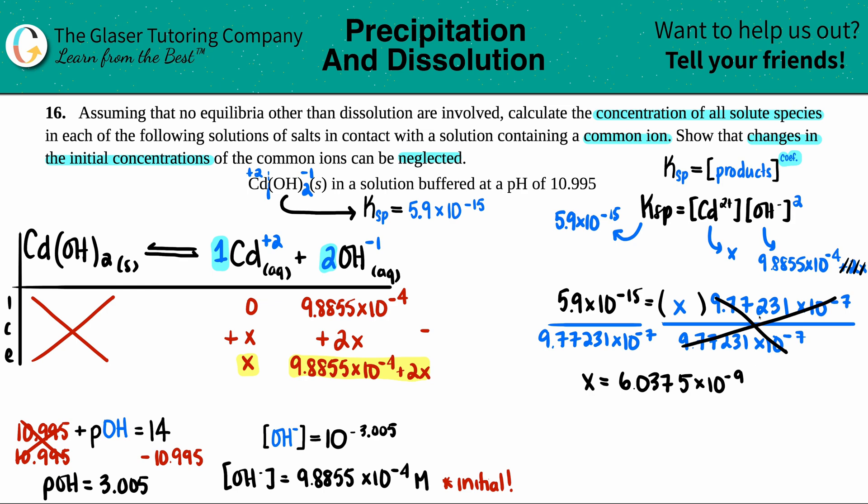Let's see if this passes the 5% rule. What you're going to do is you're going to take your x value, divide it by the initial, which is the 9.8855 times 10 to the negative 4th, and times it by 100. If this answer is 5 or less, then we assumed correctly. But if it's more than 5, we have to go back and do the quadratic equation. So 6.0375 times 10 to the negative 9th divided by 9.8855 times 10 to the negative 4th times 100. And yeah, I mean, not even 1%. So we're good. So we're going to leave this as the x and that's molarity.